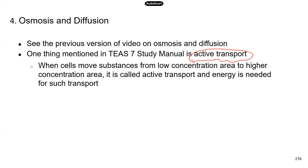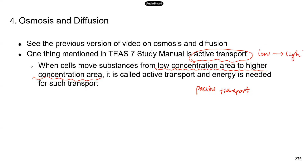Active transport is a process of substance movement that requires energy, because the molecules move from low concentration to a higher concentration area — they're going against the concentration gradient. Think of going up a hill against gravity, or swimming against a current in a river — you have to put in the work. That's why active transport requires energy.